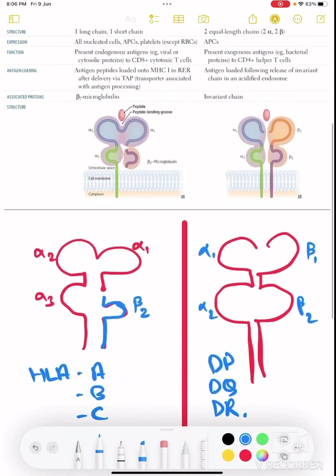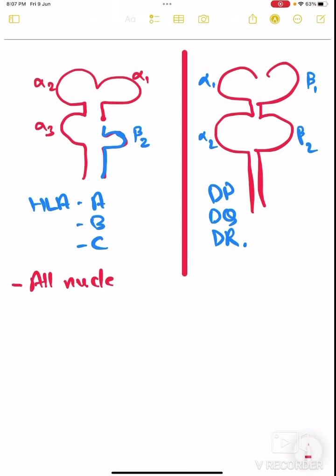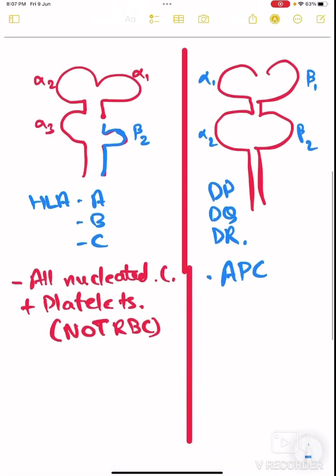Now coming to the expressions. MHC class 1 is expressed in all nucleated cells plus platelets, because they don't have nucleus, but not RBCs. They are never present in RBCs. MHC class 2 is expressed only in antigen presenting cells.